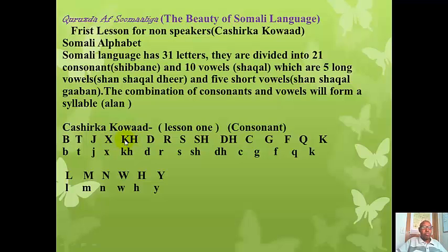The combination of K and H — we say 'Kha.' The combination of D and H is 'Dha.' This letter is similar to C in English, but in Somali we say 'Kha.' So the pronunciation is like 'kha,' 'khalak,' 'manak,' 'wa,' 'ha.'